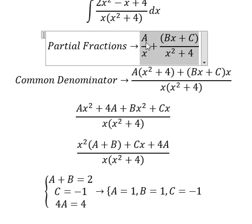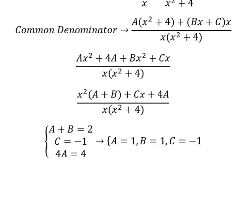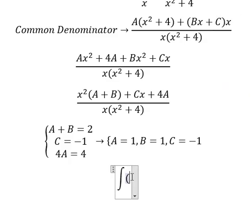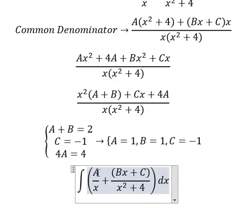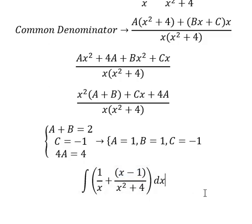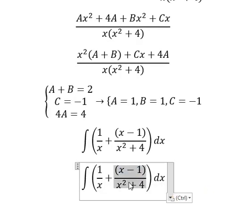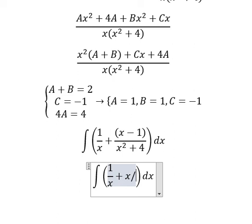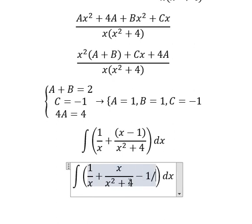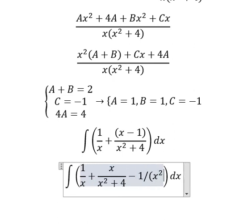So we put the values A, B, C in here. A equals 1, B equals 1, C equals negative 1. For this one, I can put it as x over x squared plus 4, and negative 1 over x squared plus 4.